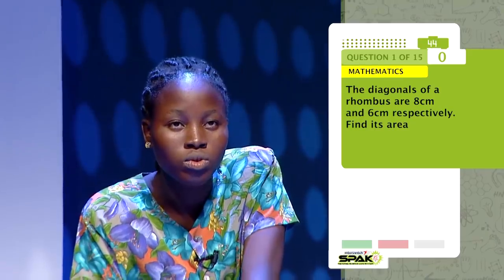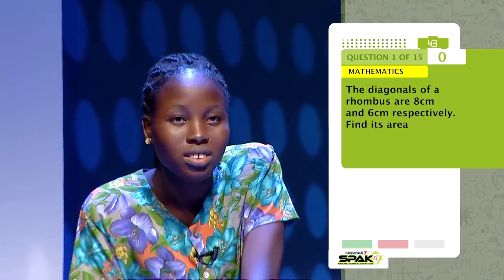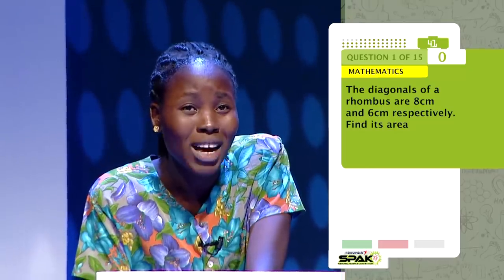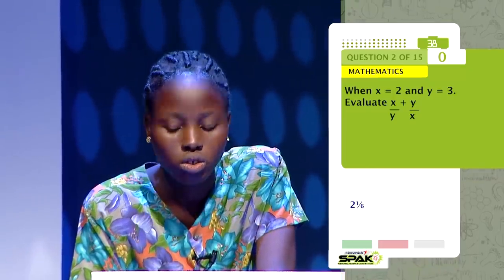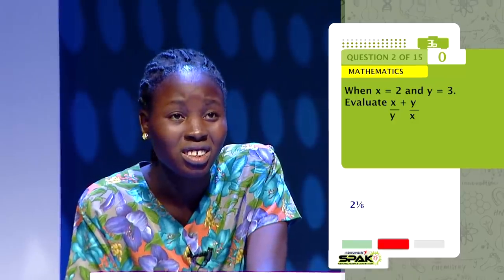The foundation round is done and we are left with 5 super SPACs as we kick off the advanced round, starting with Anita Alabi. The diagonals of a rhombus are 8 cm and 6 cm respectively — define its area. Pass. When X equals 2 and Y equals 3, evaluate. Factorize completely 64 X raised to the power of 3.